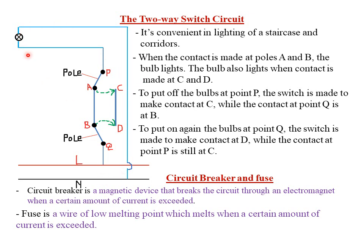To switch off the bulb at point P, the switch at P is moved to make contact at C while contact at Q is maintained at B. Moving A up to C introduces a gap between A and P, creating an open circuit so no current flows through the bulb and it switches off. This gap ensures the circuit is open and the bulb goes off.